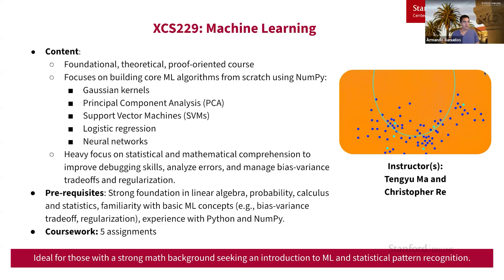Next we have another foundational course, XCS 229 Machine Learning. This is a great course for those who have a strong math background and are seeking an introduction to ML. The course focuses on building core ML algorithms from scratch using NumPy — you'll be building algorithms like Gaussian kernels, PCA, and SVMs. The course is very proof and theory heavy, with an emphasis on statistical and mathematical comprehension to help you deeply understand ML algorithms. Prerequisites include a strong foundation in linear algebra, probability, calculus, some basic familiarity with ML concepts, and experience with Python and NumPy. There are a total of five assignments for this course.